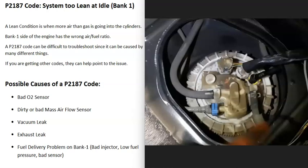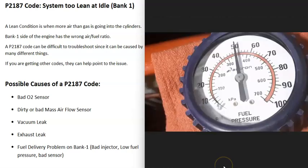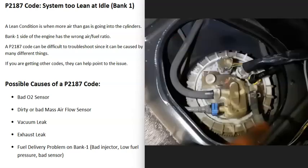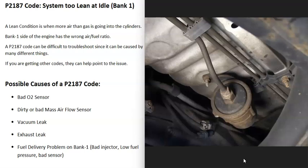A fuel delivery problem on the bank one side is another cause — things like a bad injector or low fuel pressure. Pay attention to any other codes like P0301 or P0302, which can indicate a cylinder misfire and help you narrow down the problem. You can also check fuel pressure with a fuel pressure gauge and look up the rated pressure for your vehicle. For example, if your vehicle should be at 60 psi but reads 50 psi, that could indicate a bad fuel pump or fuel filter. Usually fuel delivery issues affect both banks, but sometimes unusual things happen.